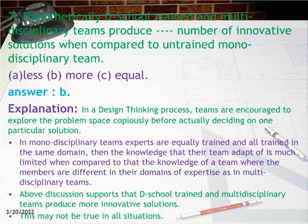Question 7: Hypothetically, d-school trained and multi-disciplinary teams produce how many innovative solutions compared to untrained mono-disciplinary teams? a) less, b) more, c) equal. Answer: b. Explanation: In design thinking, teams are encouraged to explore the problem space copiously before deciding on a solution. In mono-disciplinary teams, knowledge is limited to one domain, whereas multi-disciplinary teams draw from varied domains of expertise, producing more innovative solutions — though this may not be true in all situations.